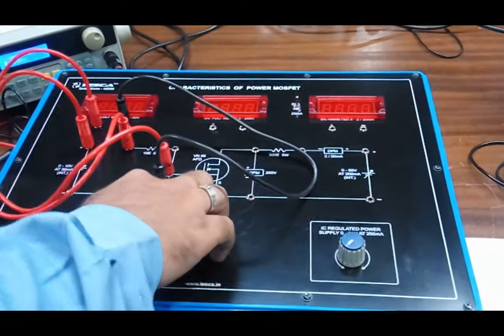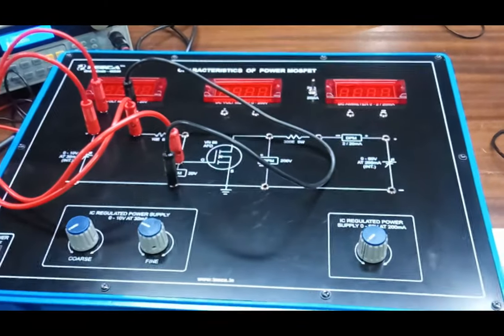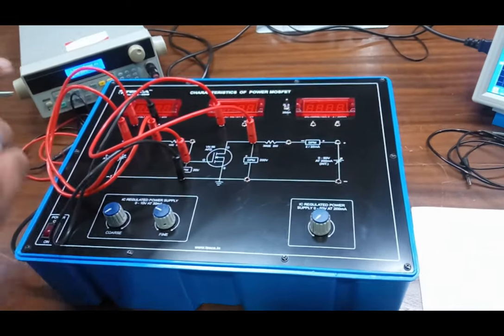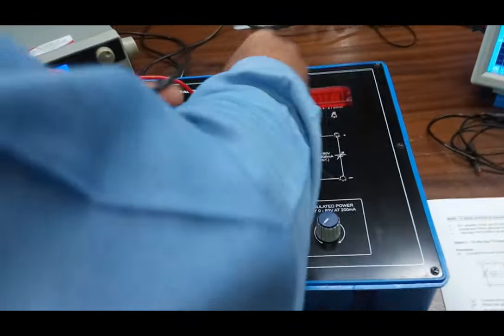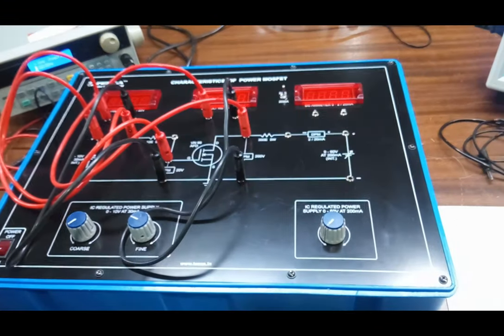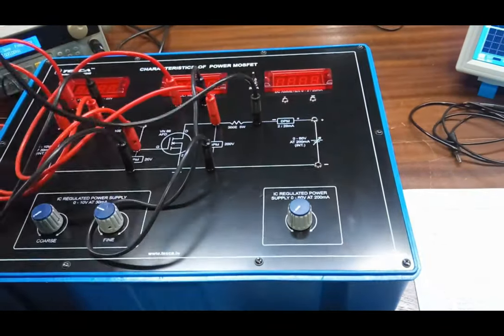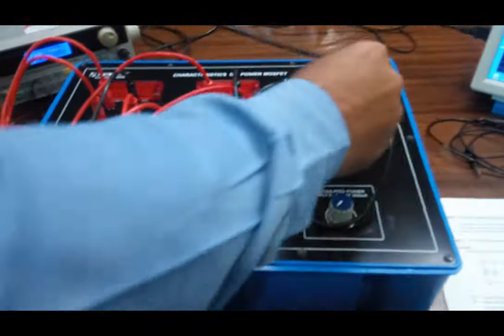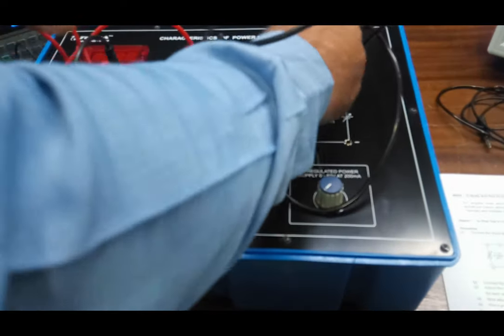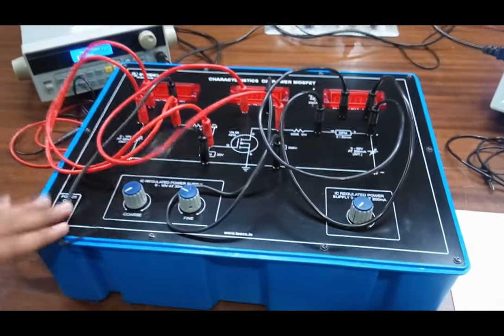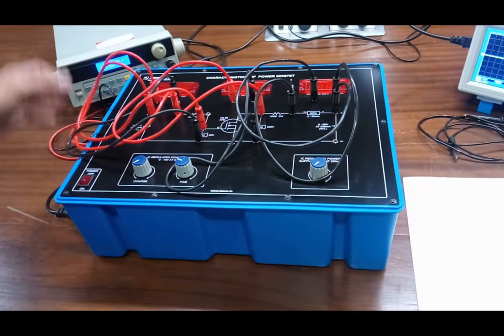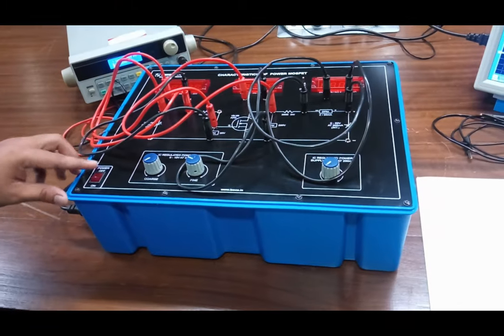There we have connected the 20V voltmeter. Now we connect the 200V voltmeter for drain source voltage. So we have made up the connection. Always verify the connection from the circuit diagram to make sure the experiment is correct.